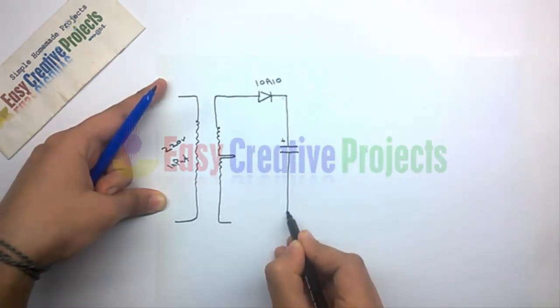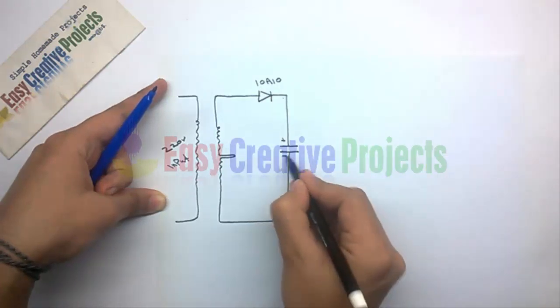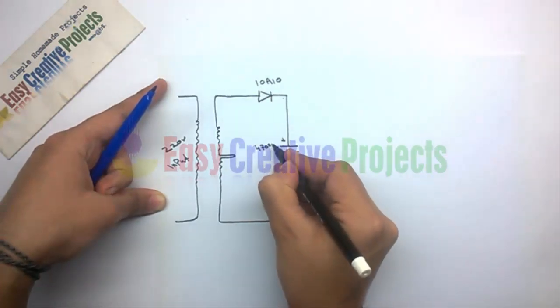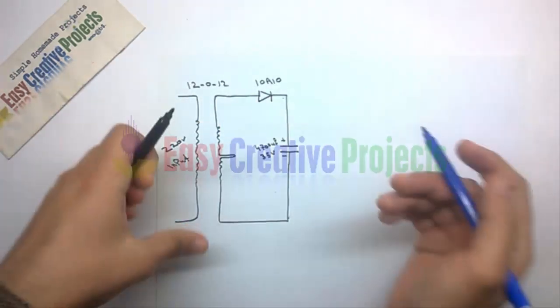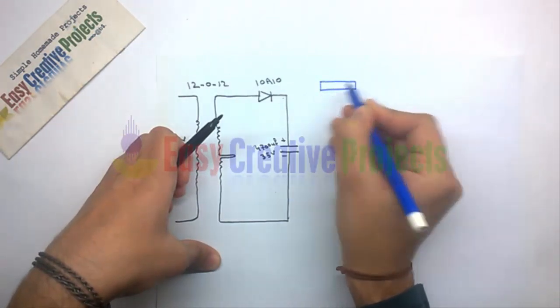Now positive side of 4700 microfarad capacitor connect with second side of diode, and negative side connect with ground wire. Now input wire of voltage regulator connect with second side of diode.